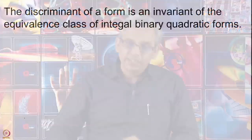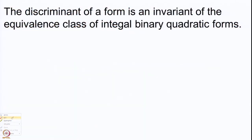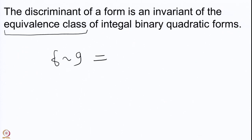Welcome back. We have defined the discriminant of an integral binary quadratic form and studied it at some length in our last lecture. The most important thing about the discriminant is that it does not change when we apply our transformations to the binary quadratic forms. The discriminant is an invariant of the whole equivalence class of integral binary quadratic forms. If F is equivalent to G, then the discriminant of F equals the discriminant of G.